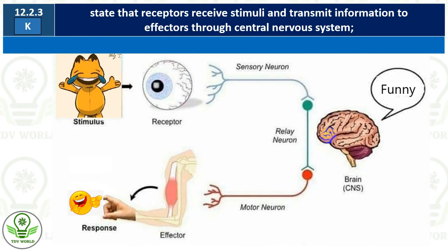Effectors receive the message and show a response. In this SLO, we need to state that receptors receive stimuli and then send it to effectors via the central nervous system. To understand this with an example: suppose you are watching a funny video — that funny video is the stimulus for you. A stimulus is any factor or change that produces a response in your body.